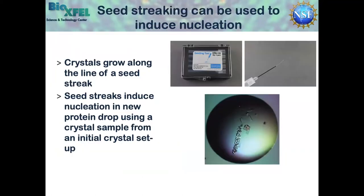As Diana mentioned: suppose you had a crystal hit that was really nice, and for whatever reason — you're doing everything the same, purifying, using the same crystallization stocks — you're simply not seeing any reproduction of your crystallization. You can use things like a seeding tool to cross-contaminate: take a small amount of your crystalline sample from your first condition, introduce a streak through your new drop that hasn't been producing crystals, and they will actually grow along the streak. This is the seed streaking approach Diana mentioned earlier, and of course it induces nucleation in the new drop by introducing micro crystals from the initial setup.